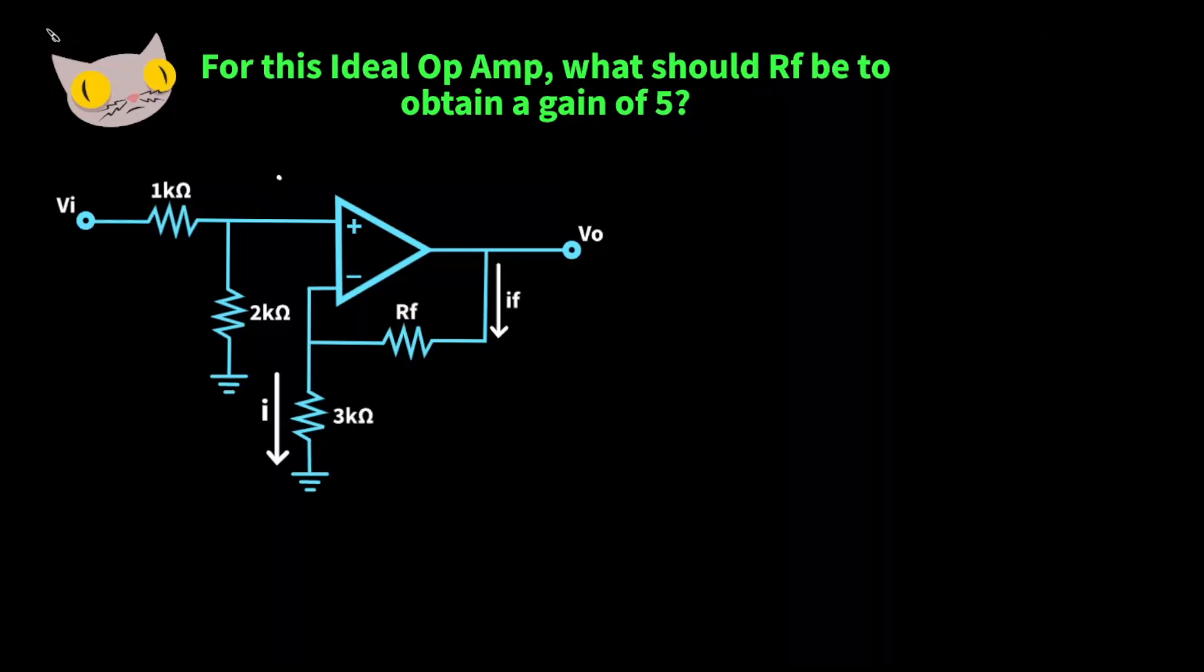For this ideal op-amp, what should RF be in order to obtain a gain of 5?